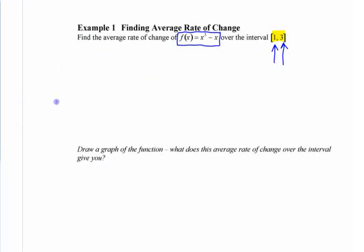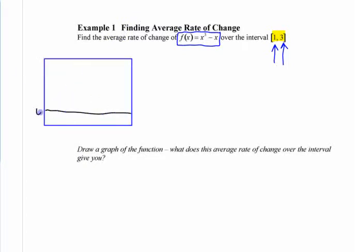So my graph — if you have a simple-looking graph here, it looks something like that. For the window I had here, 0 to 4.7. If you're ever drawing a graph, put a scale down. Whatever your scale is, just put the numbers on the ends of the axes — it shows how big your graph is. And I think the graph looks something like this.